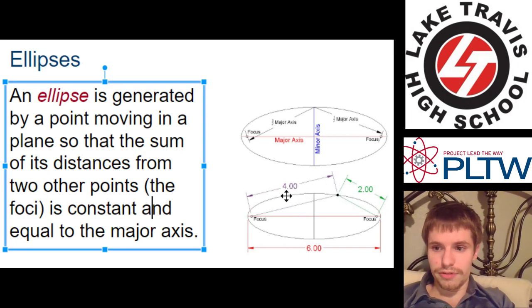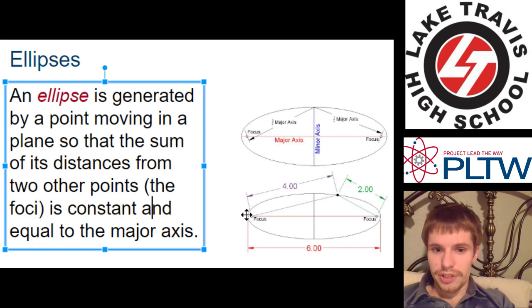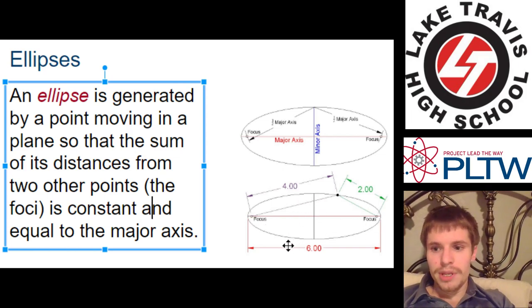If it's over here, that'll be two and four instead of four and two. If it's over here, that'll be just a tiny bit plus a lot more. So maybe 0.1 plus 5.9, that's still six. It's always going to be equal to this major axis.